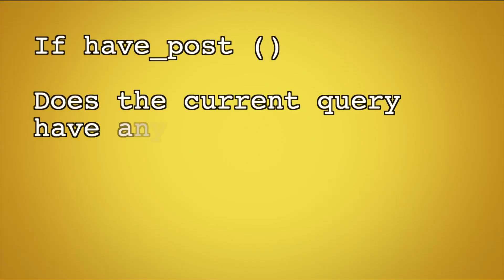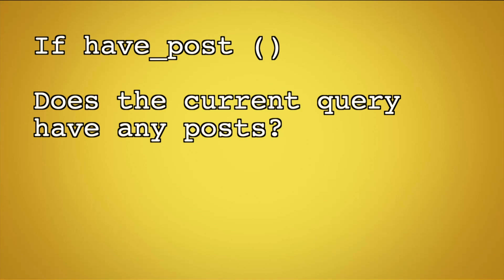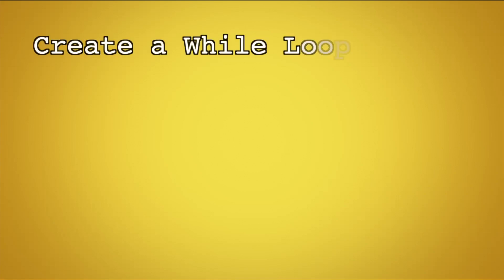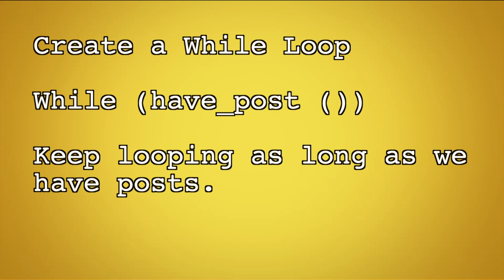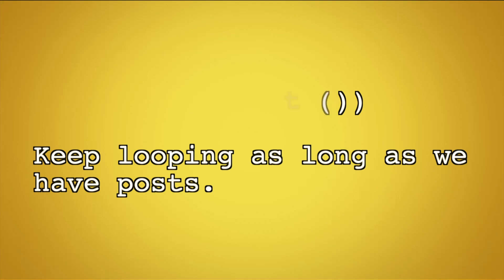We'll talk very basic here — just four different functions. The first one is called have_posts(), and it checks to see if the current WordPress query has any posts. It's a Boolean value, which means it returns true or false, and it would normally be put in an if statement right before your loop. Once we're in there, if we do have posts, we display them using a while loop in PHP. A while loop runs continuously until the condition within the parentheses is false, so while we have posts, we keep looping through and display those posts accordingly.